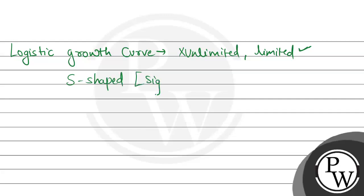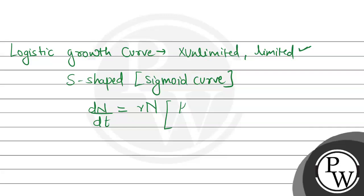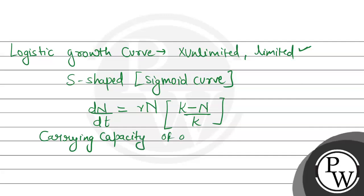It is called the Sigmoid Curve. In the Sigmoid Curve, the equation representing it is dN by dt, where N represents population density and t represents time. The equation is: dN/dt = rN multiplied by (K minus N) divided by K. Here, K is the carrying capacity of that particular geographical location — the number of individuals that the resources can support in a population.